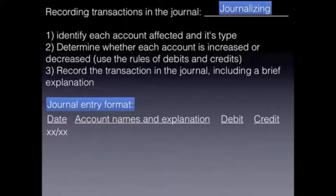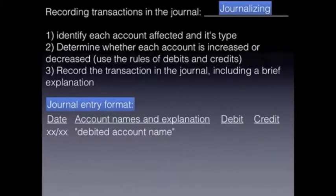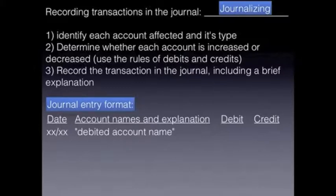The second part of the journal entry is where we list the account names and the explanation. We always list the debited account name first. Remember, assets is not an account — that is a category. When we say account name, we mean cash, accounts payable, or accounts receivable — whatever account is being debited. Recall from our rules that a debit can make some accounts increase and a debit can make some accounts decrease. That's the point of those first three steps. Then you would list the debited dollar amount.